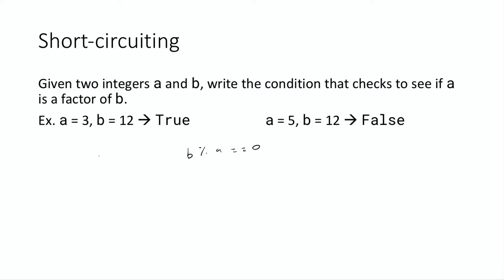What we need to do is write a second condition to make sure a is not zero, then combine both conditions together. The first condition is: a != 0. The second is: b % a == 0. Both must be true for a to be a factor of b, so we join them with AND. That's simple — but where does short circuiting come in?